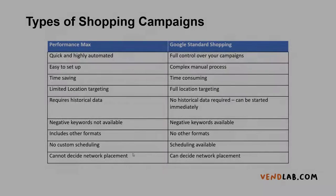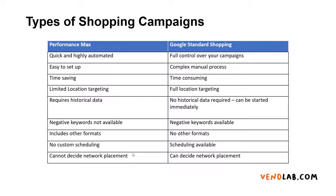So what are the different types of shopping campaigns? There are two types you can choose. Performance Max is Google's highly automated machine learning advertising format which requires very little setup. Or there are Google standard shopping ads which require more setup and offer more control, but are more difficult to set up.